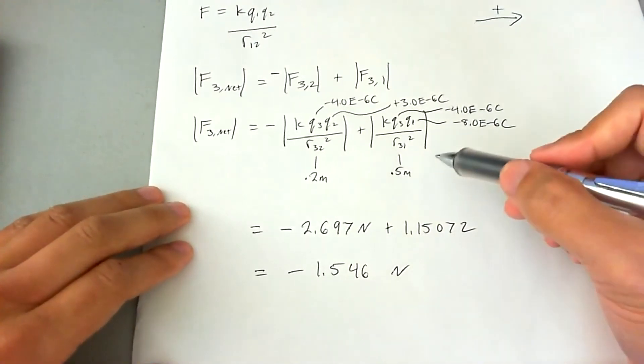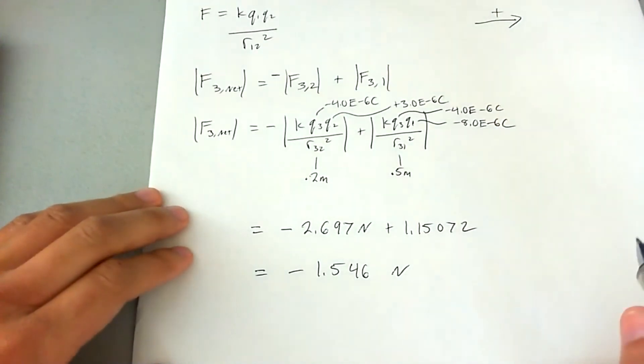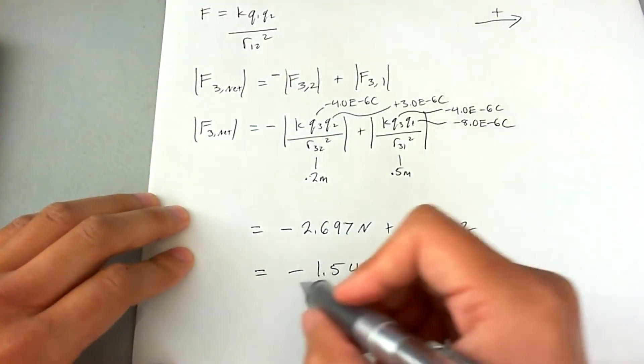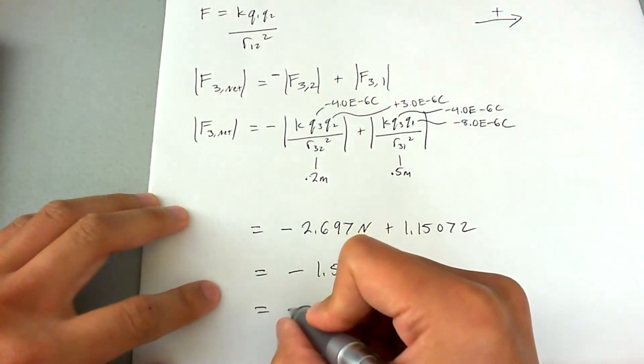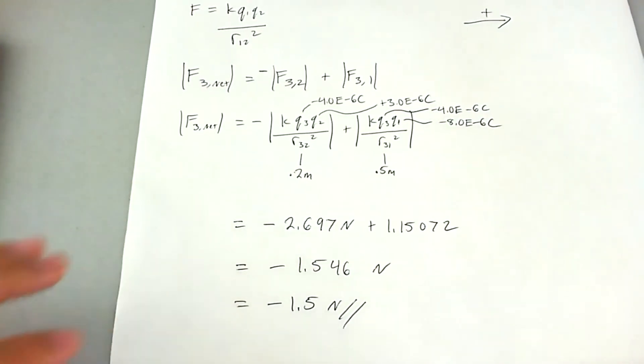If you want to get it into the proper significant figures, you'll see that on the original problem, there are two significant figures for all the values given. So we're going to reduce this down to two significant figures. And there is our answer.